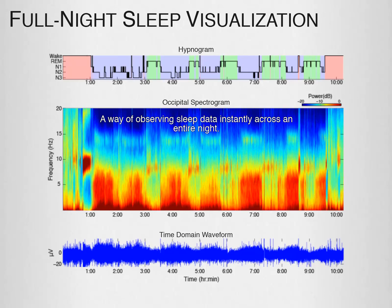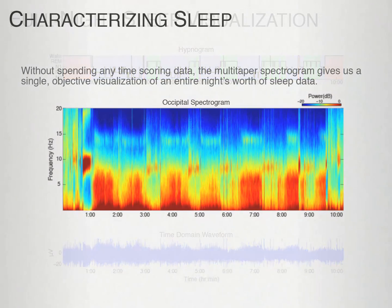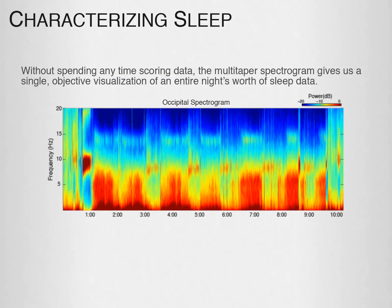This also helps illustrate why the 30-second window for RNK scoring may persist. We really cannot look at data much longer than that because the waveform compresses, merging everything together so we can't really identify much. Without spending any time scoring data, the multi-taper spectrogram gives us a single, objective visualization of an entire night's worth of sleep data.